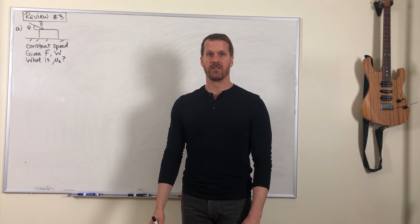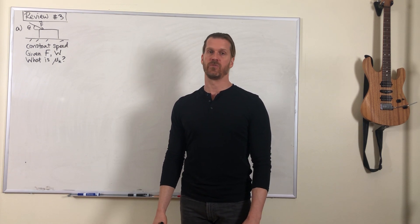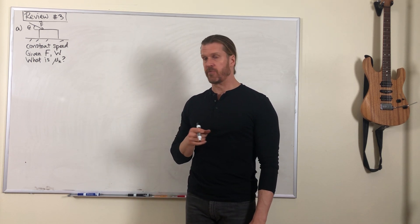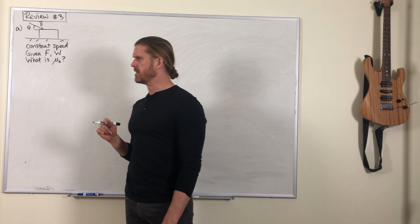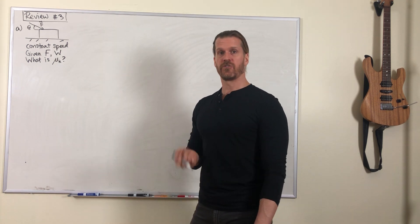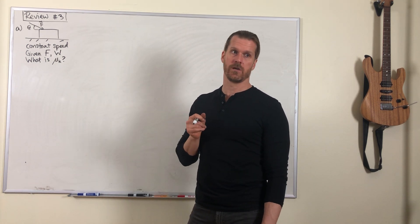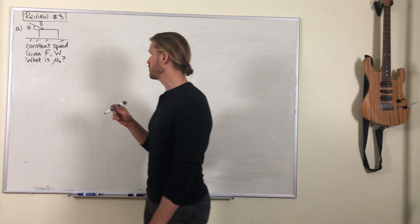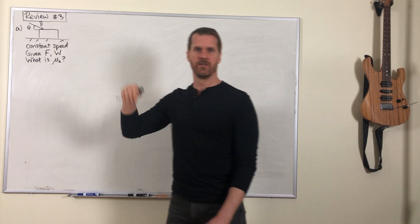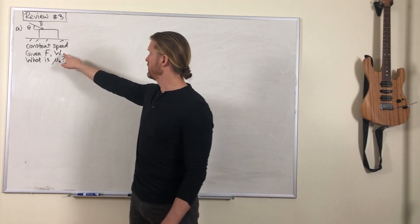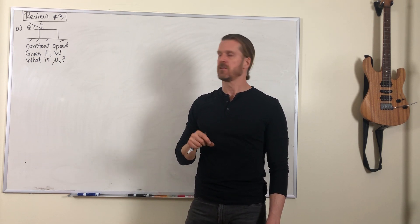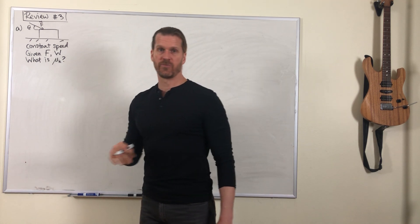Review problem number three. We're moving on from kinematics to Newton's laws. In the first part of problem three, we are pushing a box or a crate across the floor. There's friction so the box is moving at constant speed. We're given the strength of the push, we're given this angle because we're pushing slightly downward, and we're given the weight of the box. We're given the value of mg for this box.